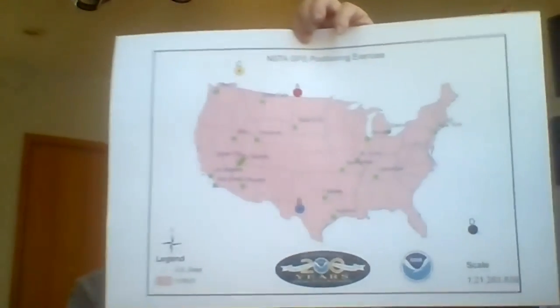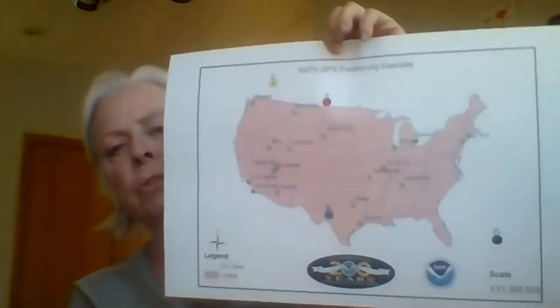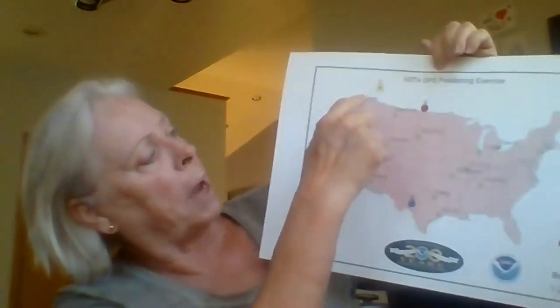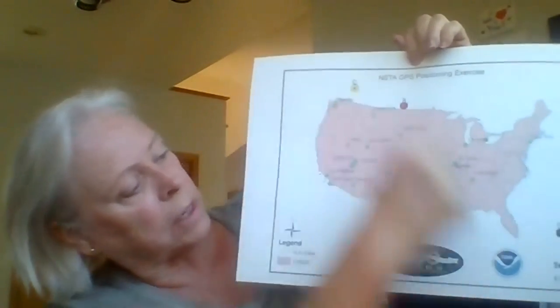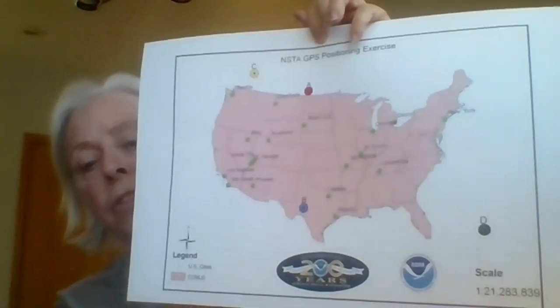I wanted to show you this chart that I had blown up and printed at a local print shop. This is an 18 by 24, it's about $1.28. You'll notice it has four spots — A, B, C, and D — which indicate the relative positions of four GPS satellites. The website has this map on it in PDF form, and you can just send that to a local print shop and get whatever size you can afford.